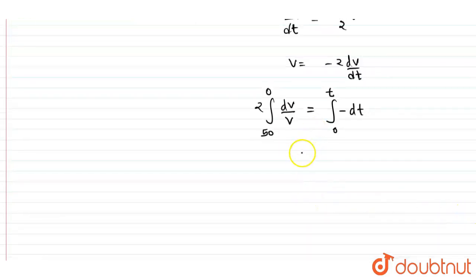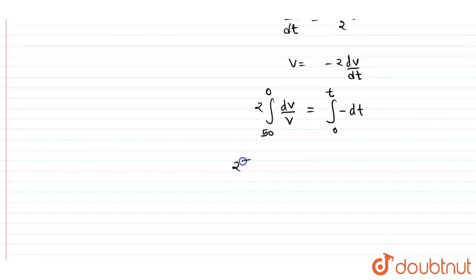Now when you solve it, you will get 1 upon v, which can be written as log v. Here we have minus 2 log v, integration of 1 upon v, and the limits are 0 to 50. And here we have when you put the limits here, you will get t. So t will be minus 2 times ln v, and the limits are from 0 to 50.